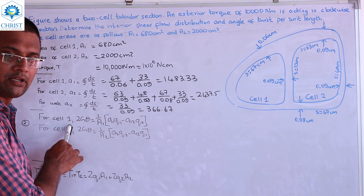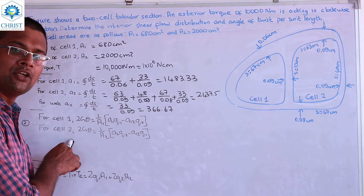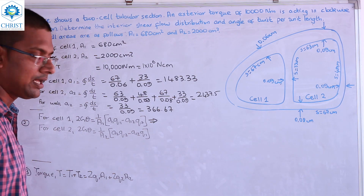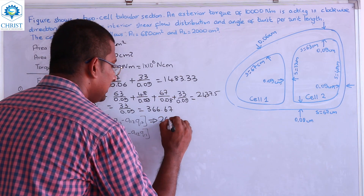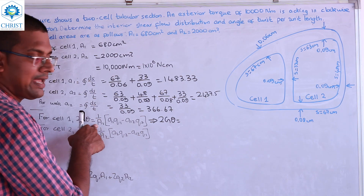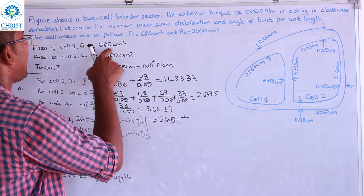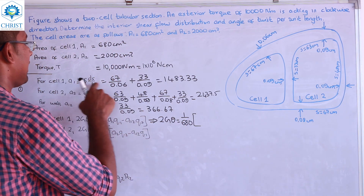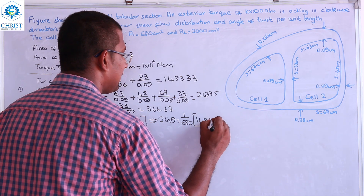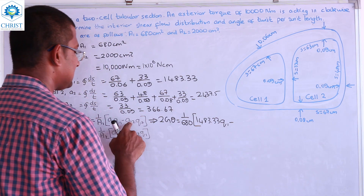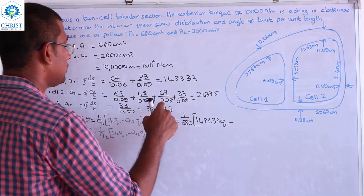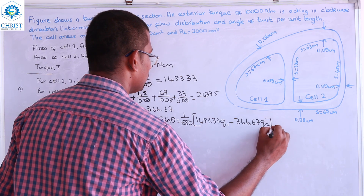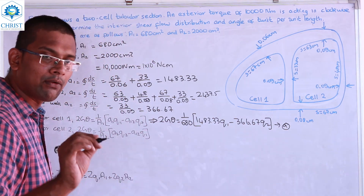Now entering the second segment, we write the compatibility equations for cell 1 and cell 2. Equation A: 2G·θ equals (1/680) into [1483.33·Q1 minus 366.67·Q2]. This is equation A.